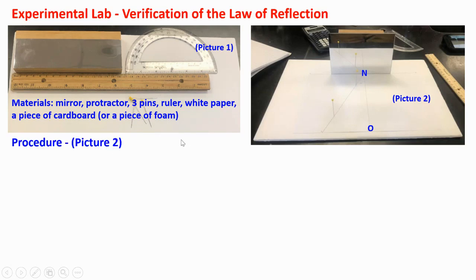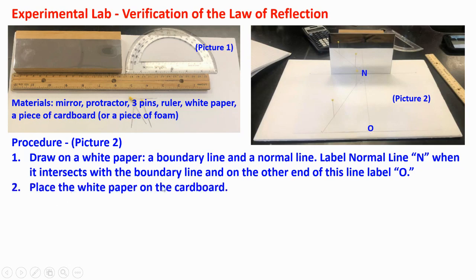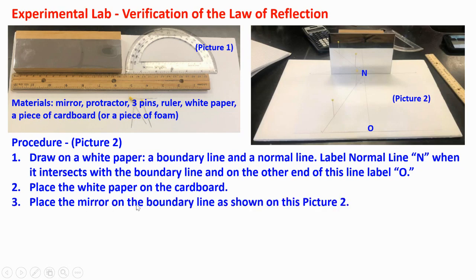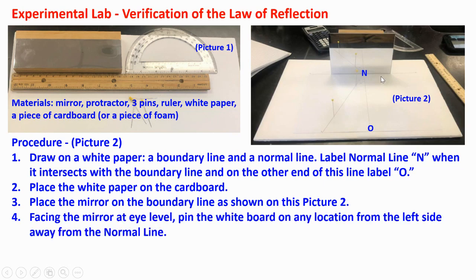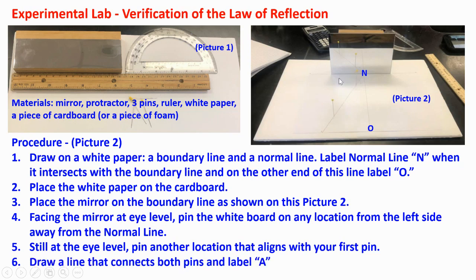Procedure: Draw on a white paper a boundary line and a normal line. Label the normal line N where it intersects with the boundary and O at the other end. Place the white paper on the cardboard. Place the mirror on the boundary line as shown. Facing the mirror at eye level, pin the white board at any location on the left side away from the normal line. Still at eye level, pin another needle that aligns with the first one. Draw a line connecting both pins and label it A.